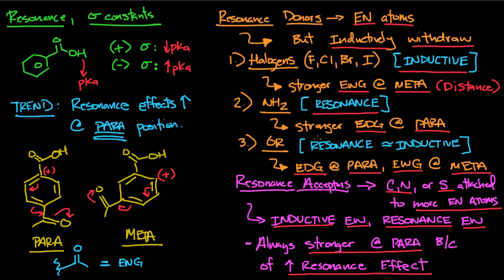Since the resonance effect is stronger at the para position, resonance acceptors are better electron-withdrawing groups at the para position compared to the meta position. Regarding Hammett constants on exams — in past years the values are given, so there's no need to memorize them. What I would suggest is having a conceptual understanding of what a greater or lower Hammett constant means, and whether positive or negative corresponds to a stronger or weaker acid.